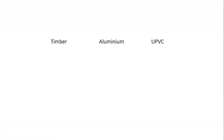When we compare the different material types, there are a few things we're going to break this down into. One is the looks, and this is probably the biggest driving factor of the windows we decide to use in our housing. The other will be cost between the different types — two windows that are the same type but made in different materials may have different pricing. We're also going to look at whether the material is high or low maintenance, meaning does it need to be re-coated, re-painted, or maintained in some way throughout its lifespan.